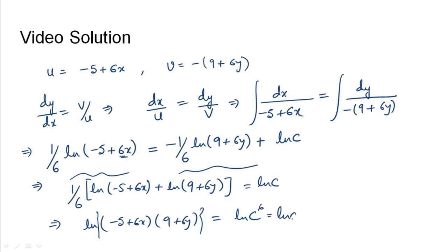Taking antilog on both sides of the equation, we would get minus 5 plus 6x into 9 plus 6y equals some constant c dash. So we can see that this is our u and this is our minus v.